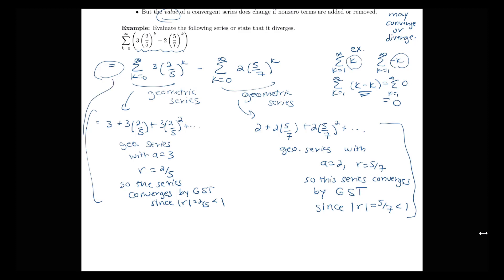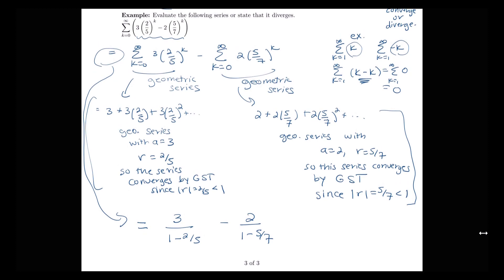Since we have confirmed that each of those two series converges, the combined sum equals a/(1 − r) for the first geometric series minus a/(1 − r) for the second. That's three divided by (1 − 2/5), minus two divided by (1 − 5/7), which simplifies to three divided by three-fifths, minus two divided by two-sevenths. So I get 15/3, or five, minus 14/2, or seven. The value of that infinite series is five minus seven, which equals negative two.